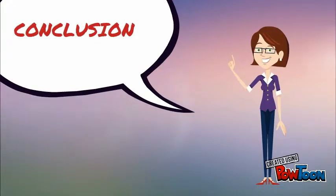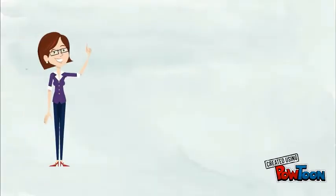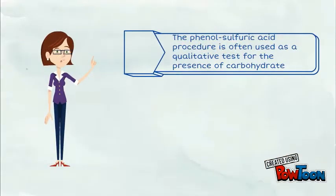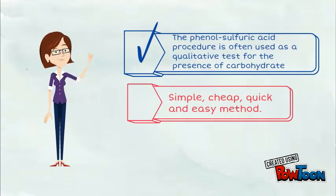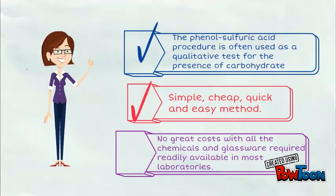As a conclusion, the phenol-sulfuric acid procedure is often used as a qualitative test for the presence of carbohydrates. Next, it is a simple and easy method. Third, there is no need for specialized odor markers or glassware because the materials are available in the laboratory.